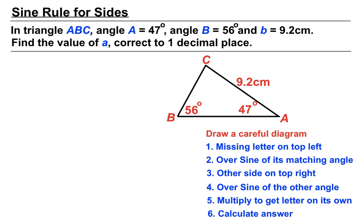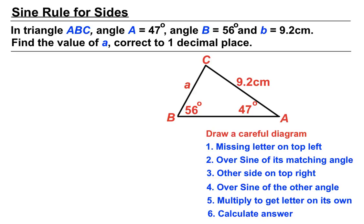We need to find the value of lowercase a. Lowercase a should go on the opposite side of the triangle from uppercase angle A. There's uppercase A — so across there is where we put the lowercase a that we're trying to find. It's important to think about where we position all these things. We've constructed our triangle. Here's our Sine Rule — step one is to put the missing letter on the top left. We're trying to find A.